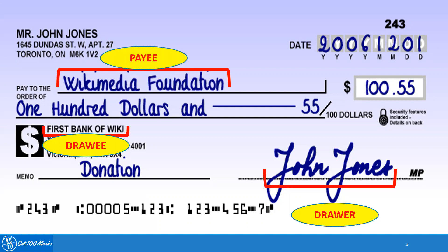So these are the three parties who are always involved in a check. I hope this gives a fairly good idea about who the different parties to a check are and how they function and what their roles are. Thank you.